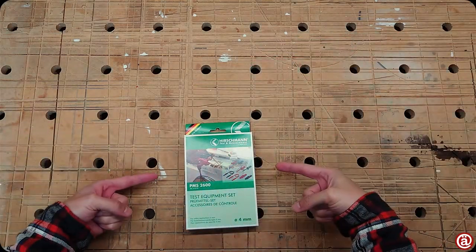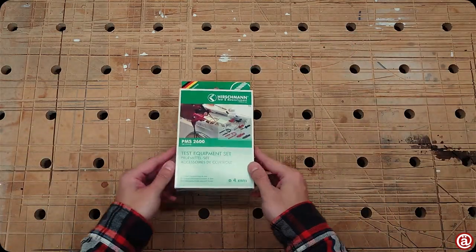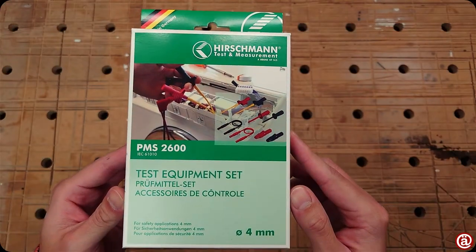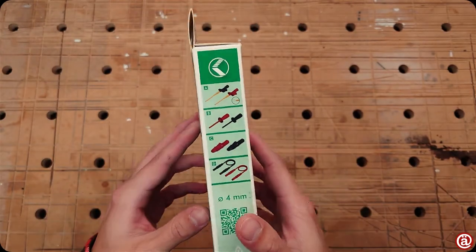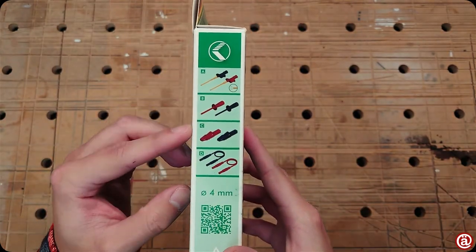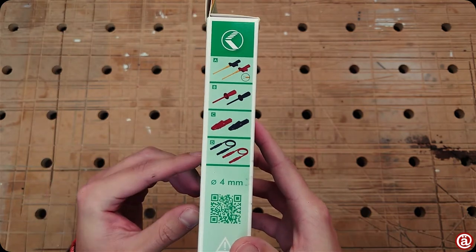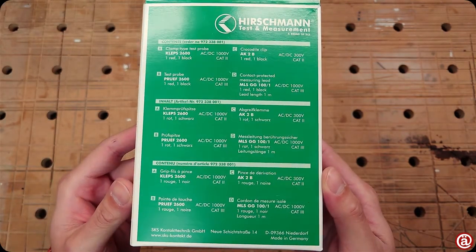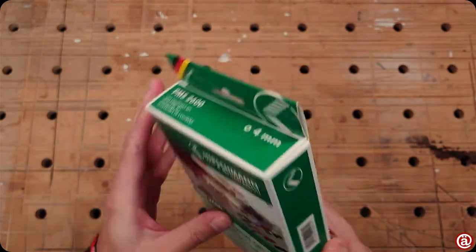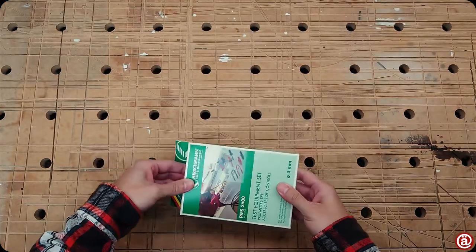And now I got this. The Hirschmann PMS 2600 test equipment set. It comes with these probes. You can check out the QR code and these are their safety ratings. But let's have a look inside.